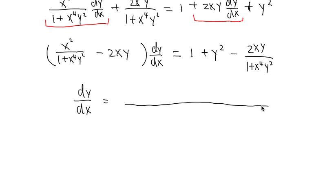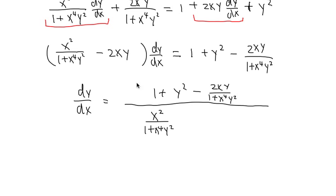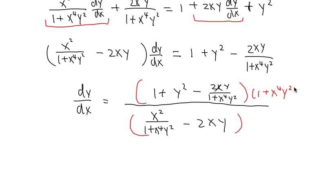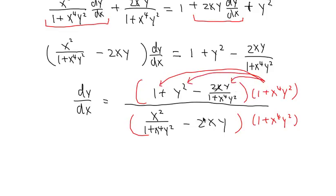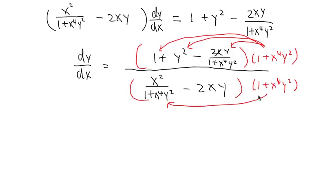This gives a large complex fraction: the numerator is 1 plus y squared minus 2xy over 1 plus x to the 4th y squared, all over the denominator x squared over 1 plus x to the 4th y squared minus 2xy. To simplify, multiply the top and bottom by the common denominator 1 plus x to the 4th y squared, and distribute it into both numerator and denominator.